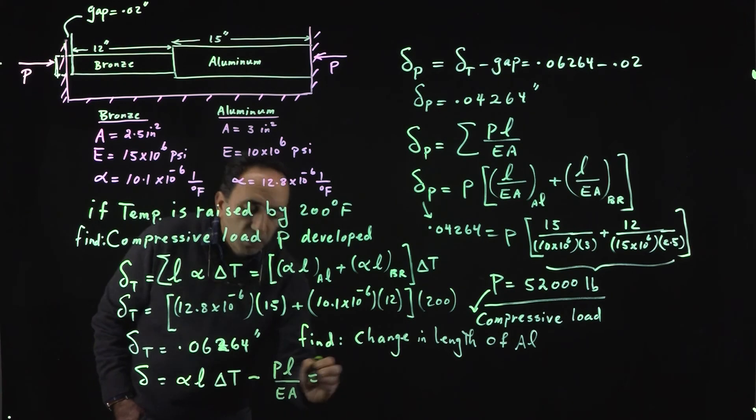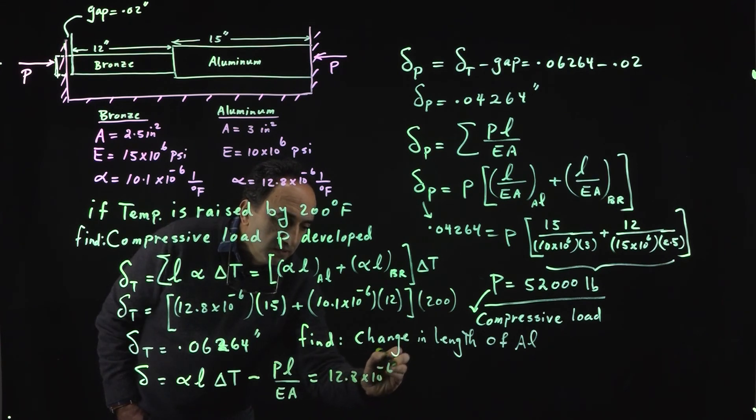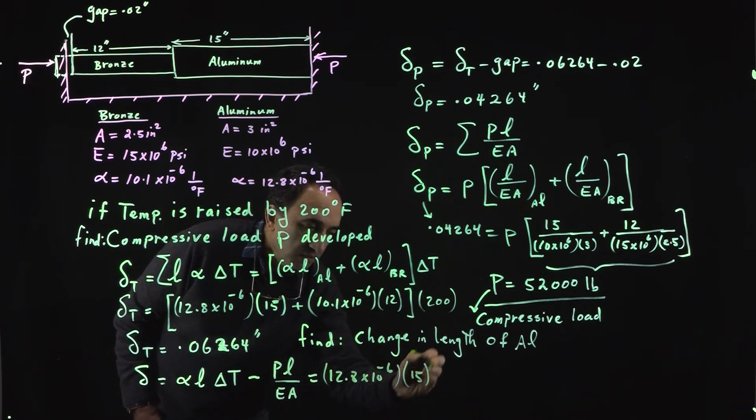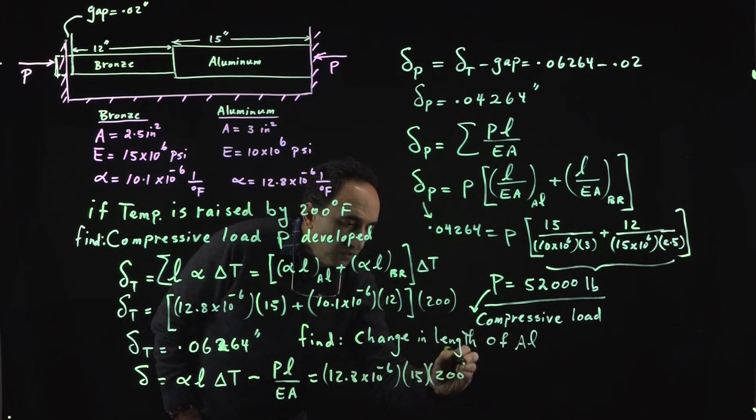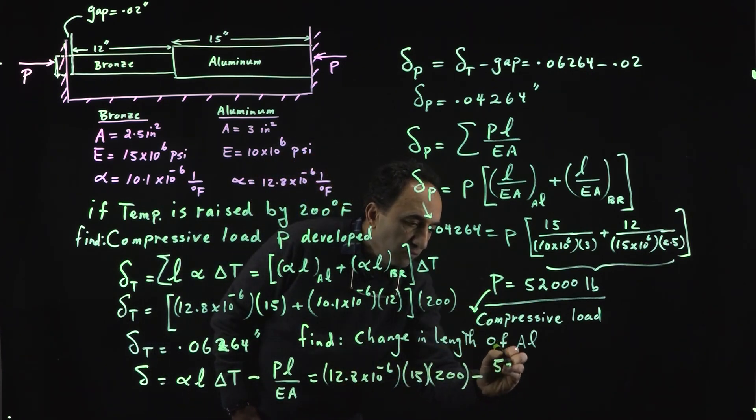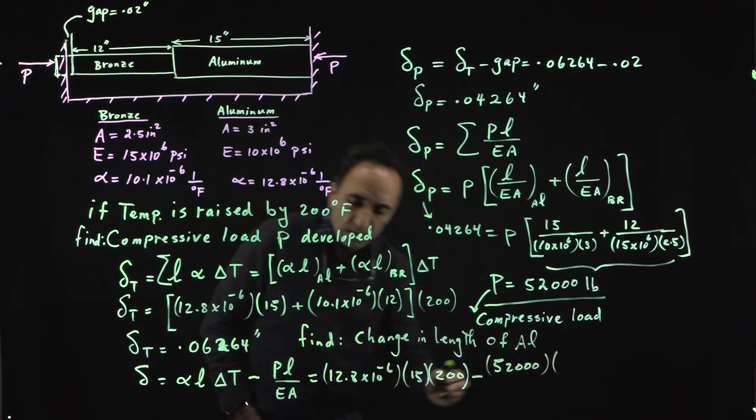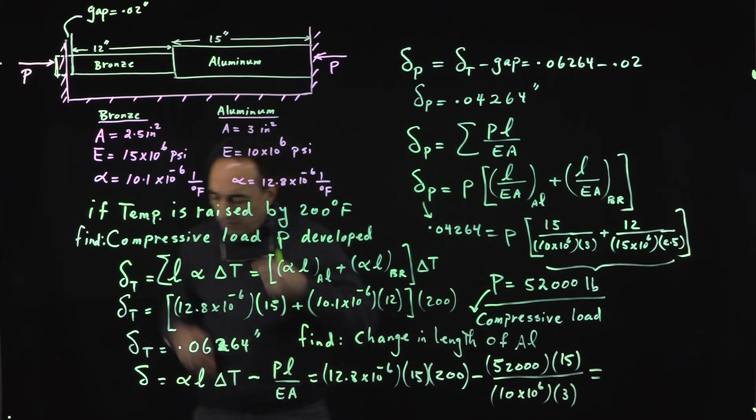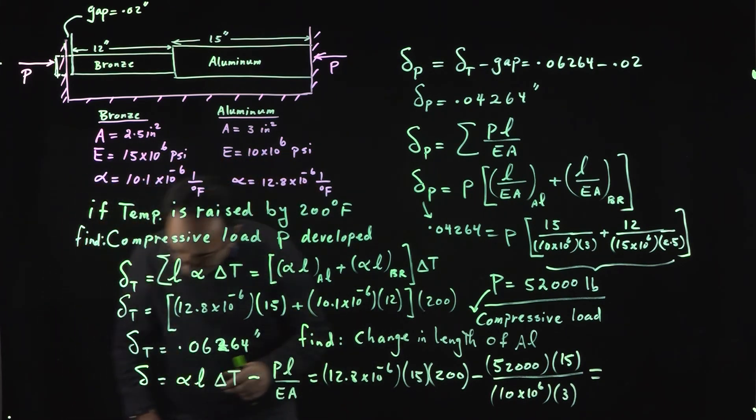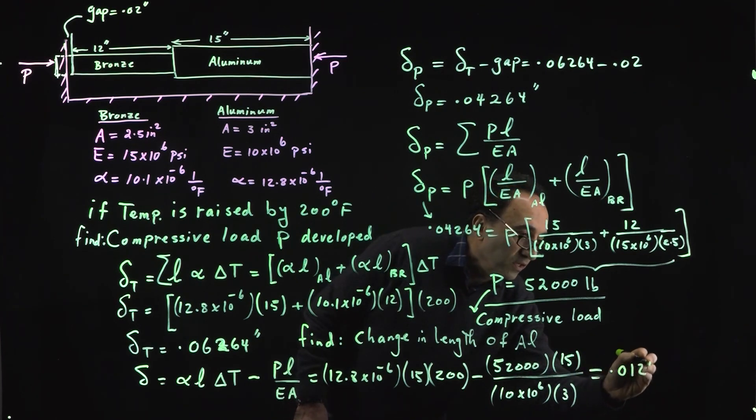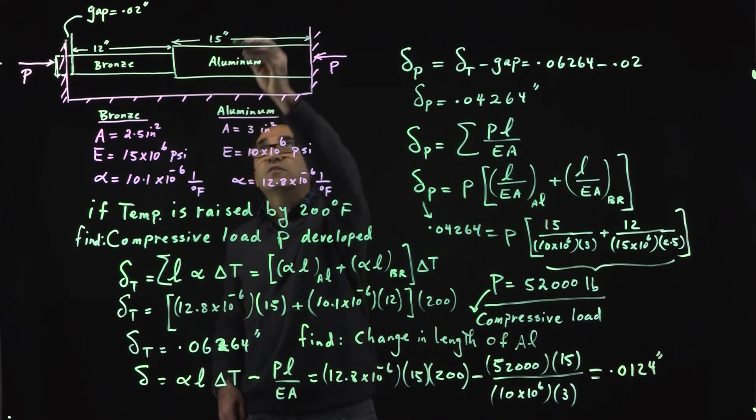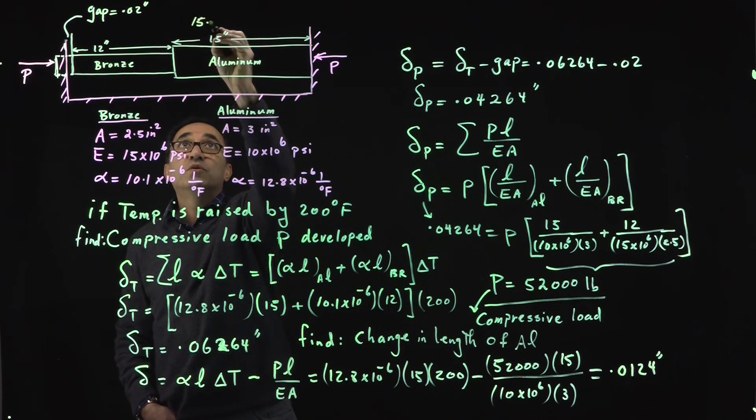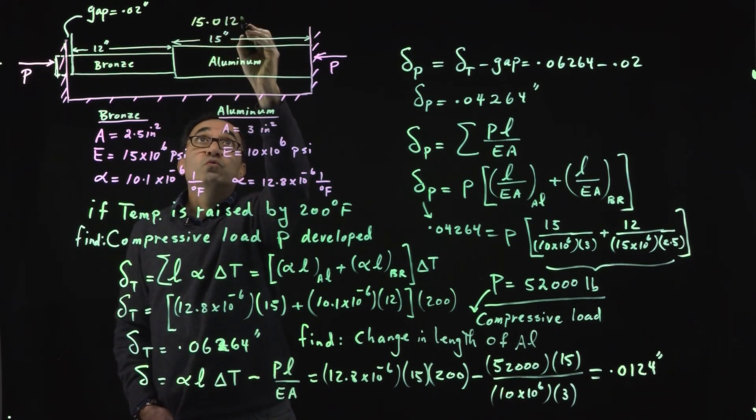If you plug in, alpha is 12.8 times 10 to the negative 6, the length is 15 inches as you could see, and temperature is 200 degrees Fahrenheit, minus the load that I just calculated for you, 52,000, times the length of 15 inches divided by modulus of elasticity of 10 million and the area of 3. This should come out to be about 0.0124 inches, so the final length of aluminum is going to be 15.0124 inches.